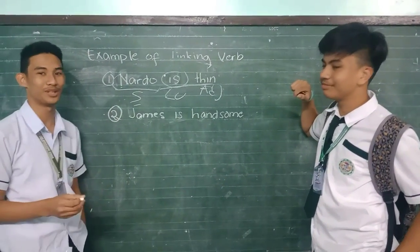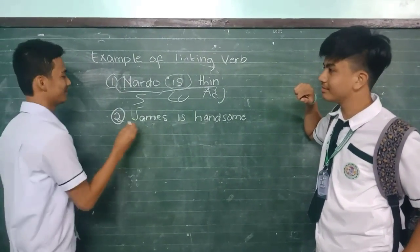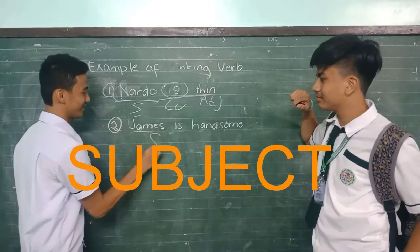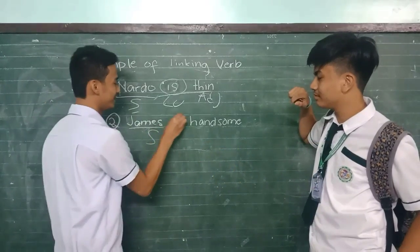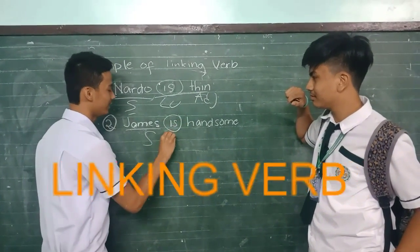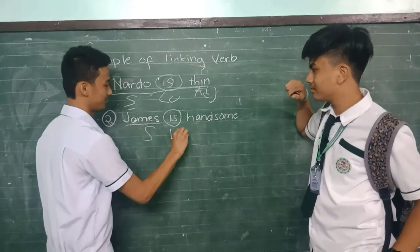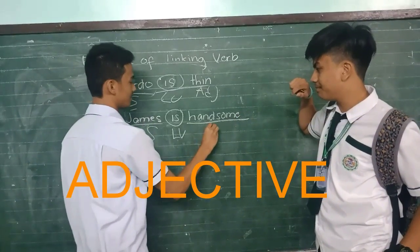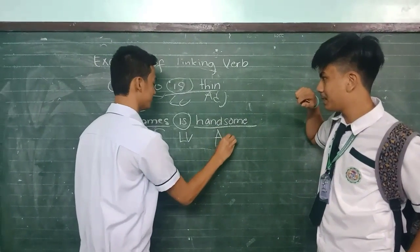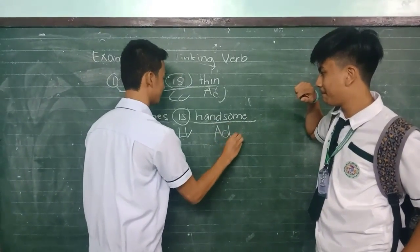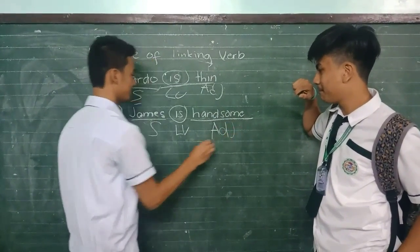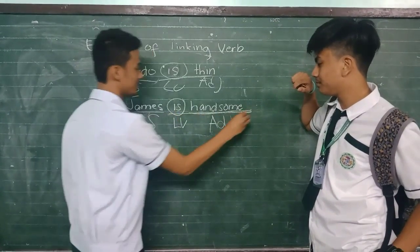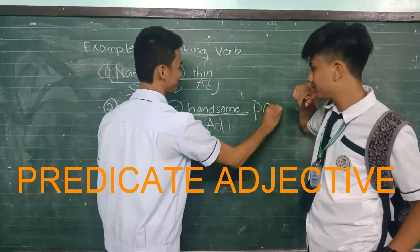Second example of linking verb: Jense is the subject, is is the linking verb, handsome is the adjective, and is handsome is the predicate adjective.